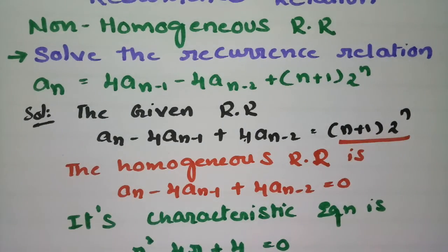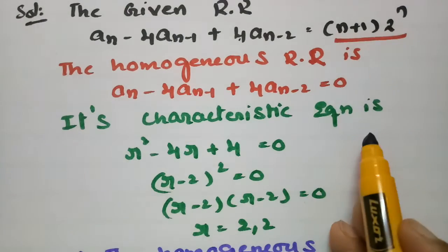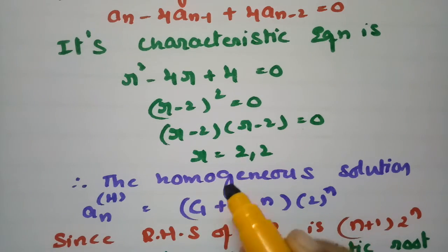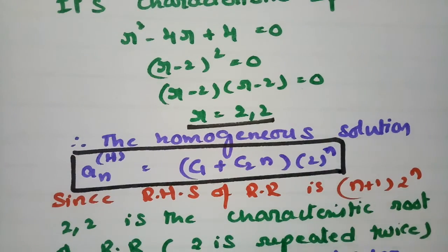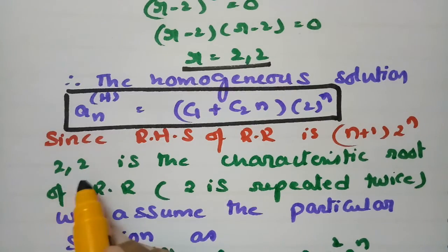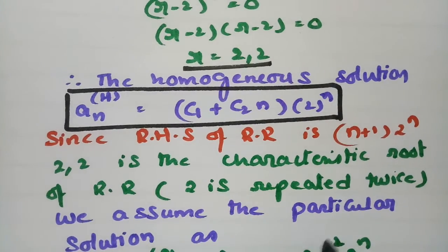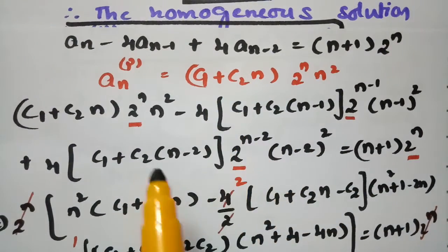To summarize: since there is an RHS, this is a non-homogeneous recurrence relation. First, write the homogeneous equation, frame the characteristic equation R²−4R+4=0, get equal roots 2,2, giving homogeneous solution (C1+C2·N)·2^N. Since the RHS is (N+1)·2^N with 2 as a repeated characteristic root, assume the particular solution as (C1+C2·N)·N²·2^N.